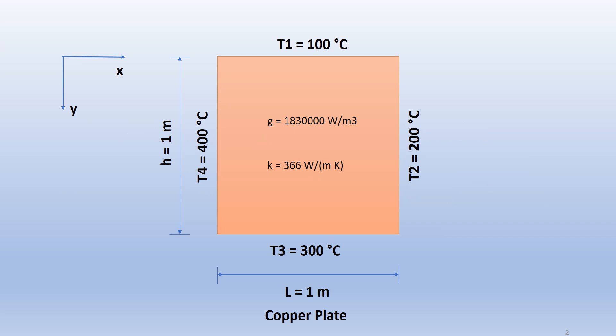Our domain is a copper plate 1 meter long and 1 meter in width. The temperatures at the four sides are fixed: T1 equals 100 degrees Celsius at the top side, T2 equals 200 degrees Celsius at the right hand side, T3 equals 300 degrees Celsius at the bottom side, and T4 equals 400 degrees Celsius at the left hand side. The heat generation term G equals 1,800,000 watts per meter cube.